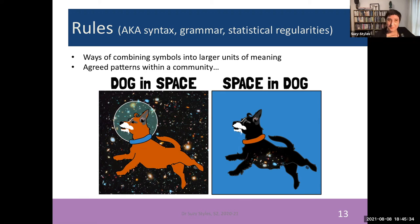Just like symbols, the rules that we use are agreed, shared between people who are part of one linguistic community together. So in the example I've got on the screen here, we have two different ways of combining the symbol dog and the symbol space with some kind of adjoining word. And these two combinations of symbols have different outcomes in the internal structure of the larger unit of meaning. So dog in space or space in dog.